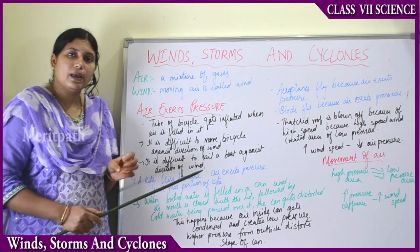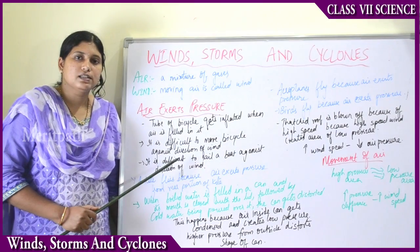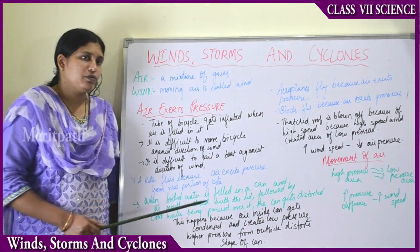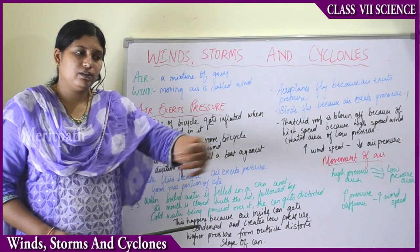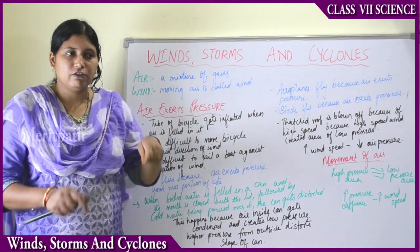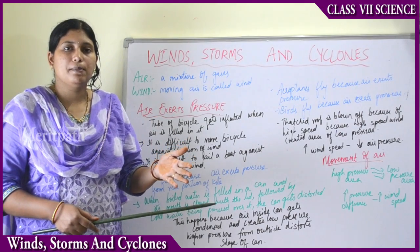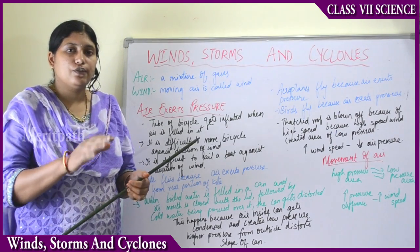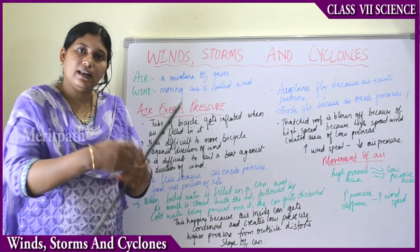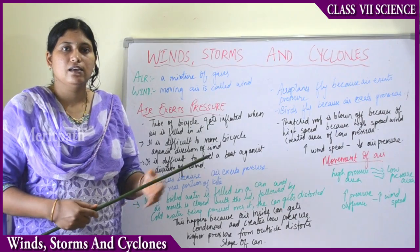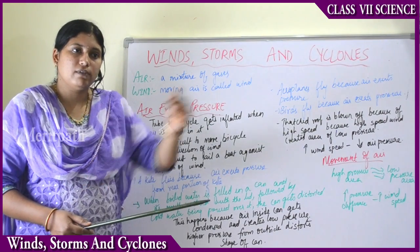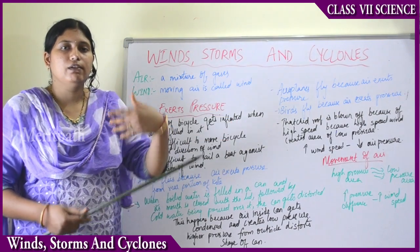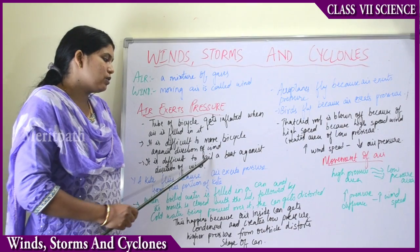It is difficult to move a bicycle against the direction of the wind. If the wind is blowing from the front and we are riding toward it, air pushes against us and exerts pressure, making it very difficult. Whereas if the wind is blowing from behind, we can ride very easily because there is less pressure from that side.